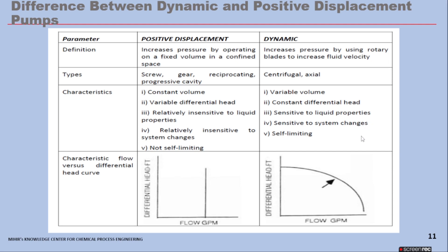Now, the difference between dynamic and positive displacement pumps. Positive displacement increases pressure by operating on a fixed volume in a confined space. Dynamic increases pressure by using rotary blades to increase fluid velocity. Types in the positive displacement category: screw, gear, reciprocating, progressive cavity. The key characteristic for PD pumps is constant volume with variable differential head, relatively insensitive to liquid properties and system changes, and not self-limiting. The characteristic curve is essentially a straight vertical line. For dynamic centrifugal and axial pumps, you have variable volume, constant differential head, sensitivity to liquid properties and system changes, and they are self-limiting — with a typical curve having a specific design point.